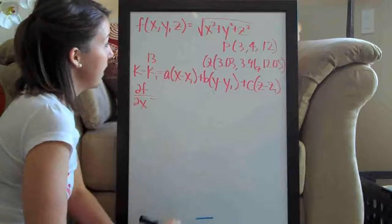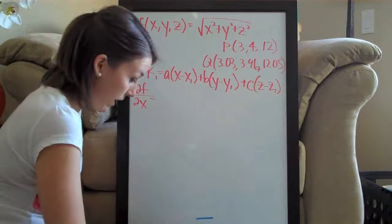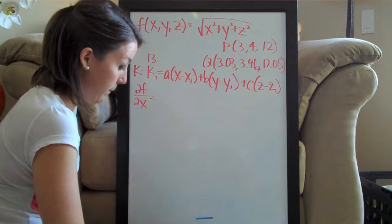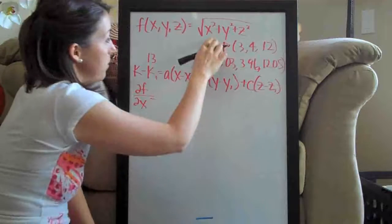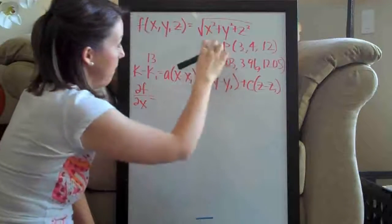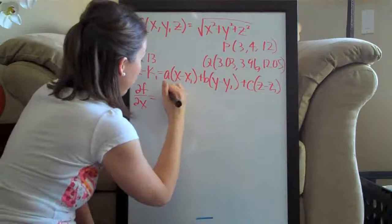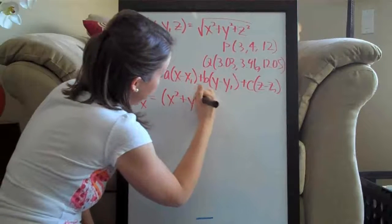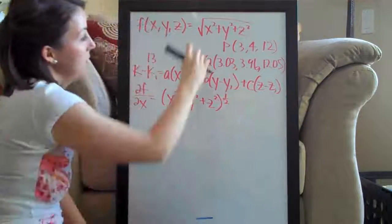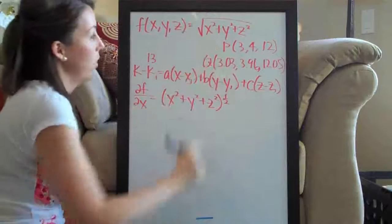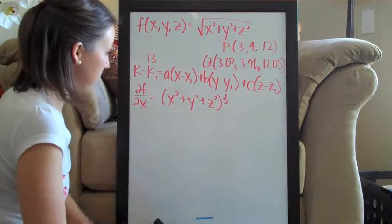So the partial derivative with respect to x — let's go ahead and rewrite this function. The square root of anything can also be expressed as that thing raised to the one-half power. So x squared plus y squared plus z squared, all to the one-half, is the same thing as the square root of x squared plus y squared plus z squared. We went ahead and converted it because it's going to make this easier.